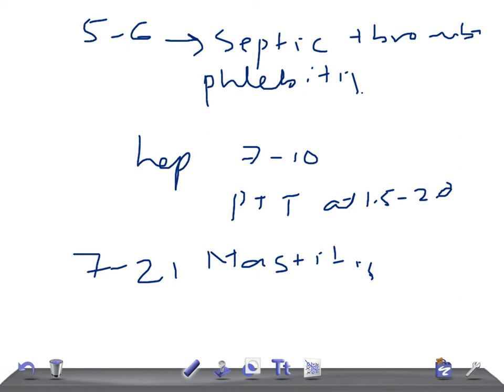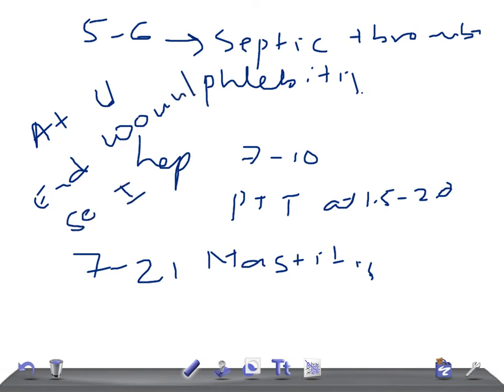Here's a mnemonic: A-U-E-W-S-I. A is atelectasis, U is urinary tract infection, E is endometritis, W is wound infection, S is septic thrombophlebitis, and I is infectious mastitis. Thank you so much for watching this video, take care.